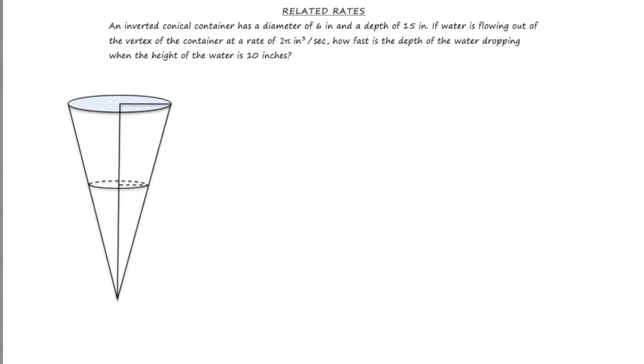Hey guys, in this video we're going to review how to do a related rates problem. The problem is: an inverted conical container has a diameter of 6 inches and a depth of 15 inches. If water is flowing out of the vertex of the container at a rate of 2π cubic inches per second, how fast is the depth of the water dropping when the height of the water is 10 inches?